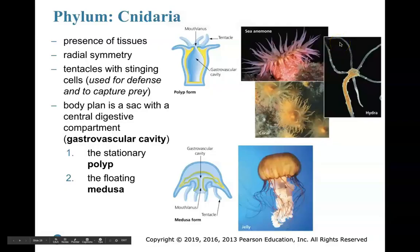Our next phylum is Cnidaria. Cnidaria is the first phylum to appear on the evolutionary timeline that has the presence of tissues. True tissues exist for these guys.